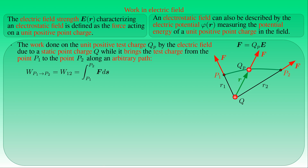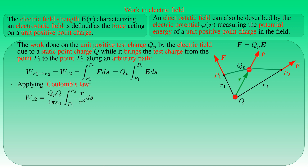The amount of the test charge QP is constant and can be factored out from the integral. Since the electrostatic field is produced by the point charge Q, we apply Coulomb's law, stating that the electric field strength equals Q over 4π times ε₀ times the position vector R divided by the cube of its length. The normalized position vector R is just the unit vector eR pointing from Q toward the test charge, and we formally calculate its scalar product with the line element vector dS. As the figure shows, this scalar product gives the differential dR at the instantaneous position of the test charge.